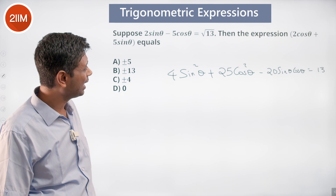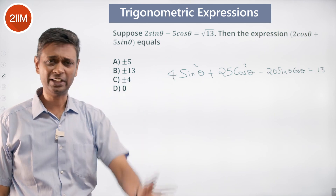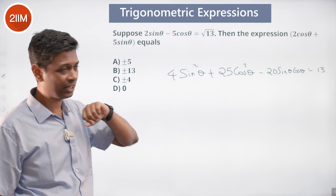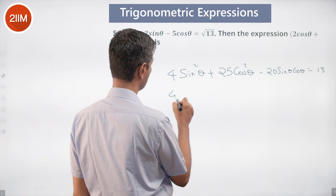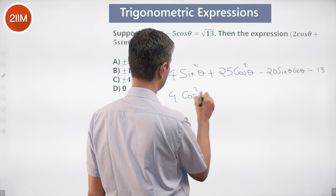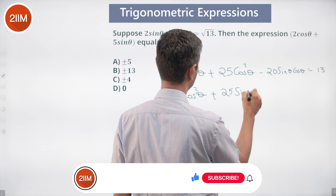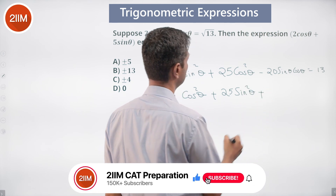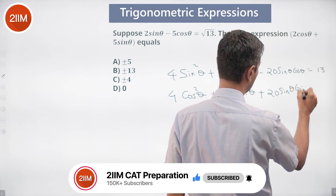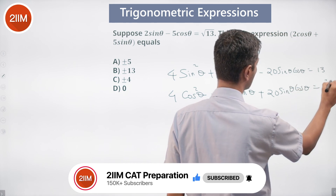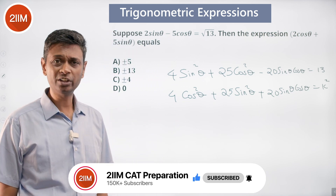And then, I can square the second expression and simplify that also. If I square the second expression, I call that expression k. So I have 4cos²θ + 25sin²θ + 2×5×2 × sinθcosθ equal to k².